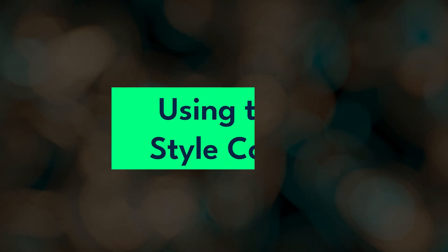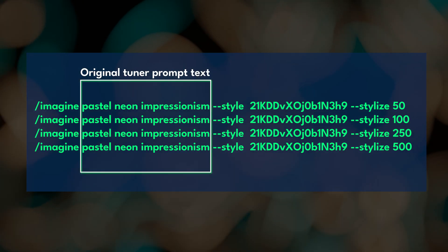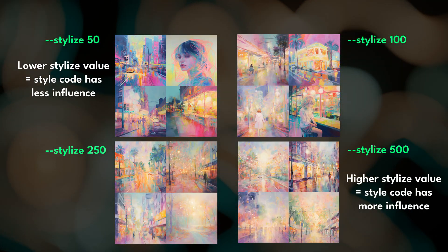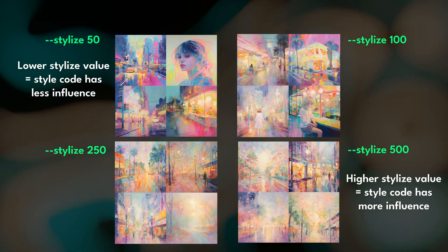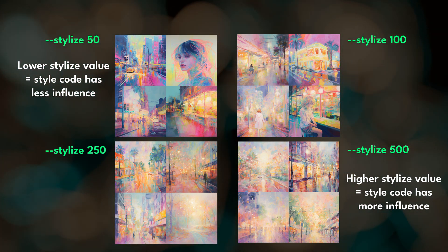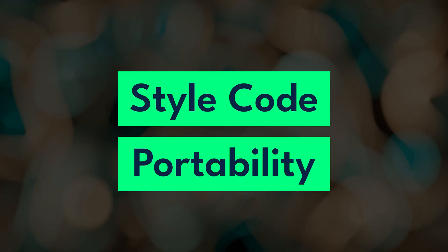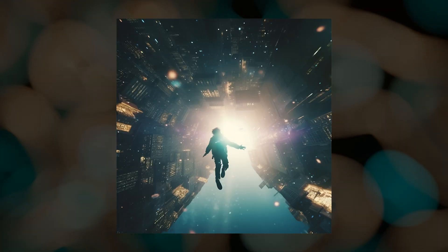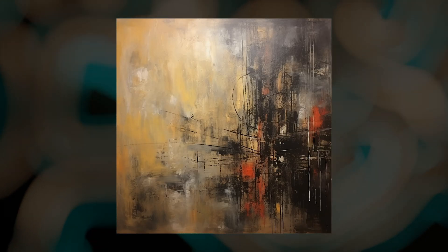So let's see how this style code performs. I'm going to submit a few jobs with the original tuner prompt text, our new style code, and a few different stylized values. Here are the results — I think that's a pretty nice aesthetic for Pastel Neon Impressionism. But what happens when I try to use this style code with a different text prompt? This is where we start talking about style code portability — basically how well the aesthetics in that style code transfer to other prompts. Style codes can affect everything from composition, subject matter, colors, medium, and so much more. If we perceive a style code as being too unpredictable, we would say that style code is not very portable.